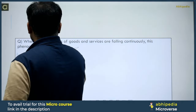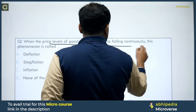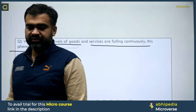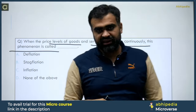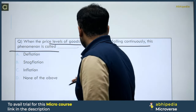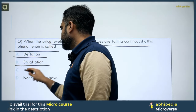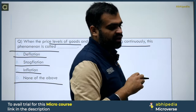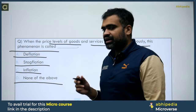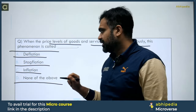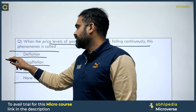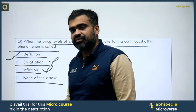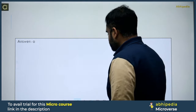Next question: When the price levels of goods and services are falling continuously, this phenomenon is called as — options are deflation, stagflation, inflation, and none of the above. The price is decreasing continuously on a continuous basis. We already covered this indirectly when we discussed inflation's opposite. The correct answer is option A — deflation. Stagflation and inflation are not correct here; inflation is in fact a general rise in price level. So correct answer is option A, deflation.